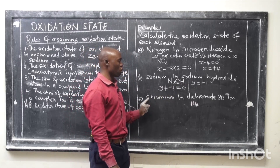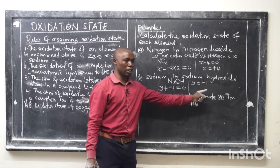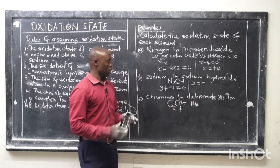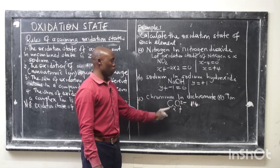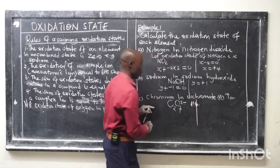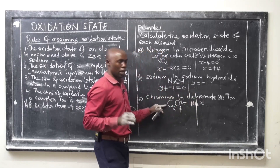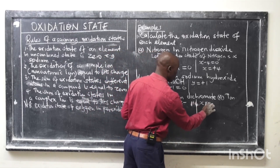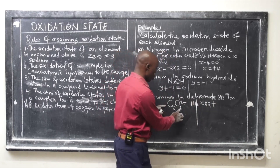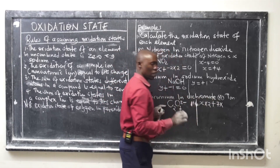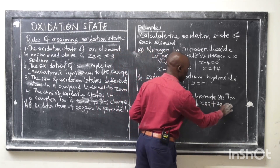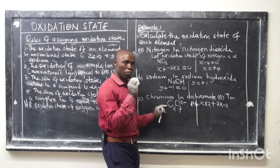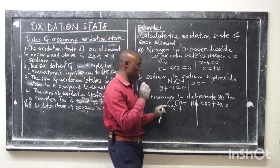Example three: calculate the oxidation state of chromium in the dichromate ion (Cr₂O₇²⁻). Let the oxidation state of chromium be X. There are two chromium atoms, so we write: 2X + 7(−2) = −2, since each oxygen has an oxidation state of −2 and the overall charge of the ion is −2. Look at the valency, then put the appropriate charge depending on whether it is a metal, non-metal, or radical.